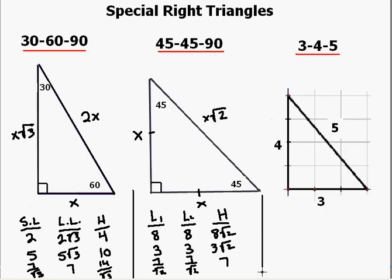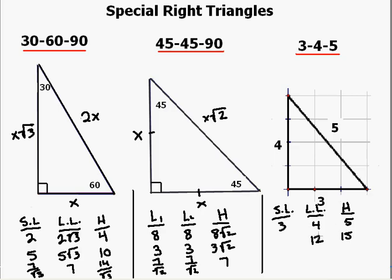Now let's go to the 3-4-5 triangle. We have a short leg, a long leg, and a hypotenuse. If the short leg is 3 and the long leg is 4, the hypotenuse is 5. If the hypotenuse is 15, the long leg is 12 and the short leg is 9. If the long leg is 20, the hypotenuse would be 25 and the short leg would be 15.